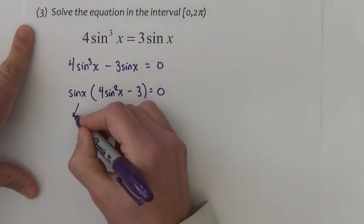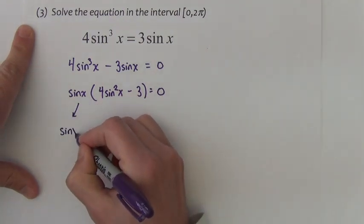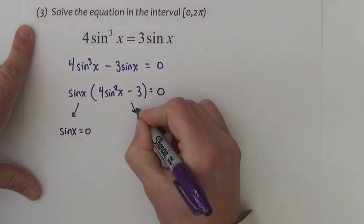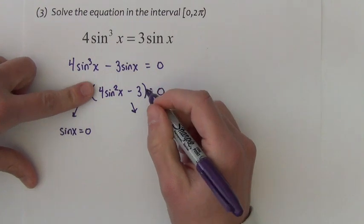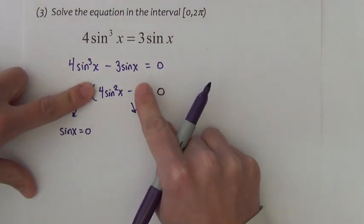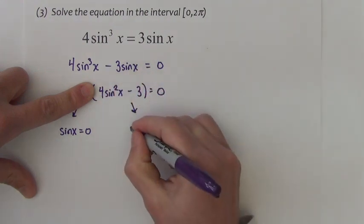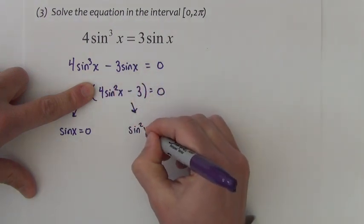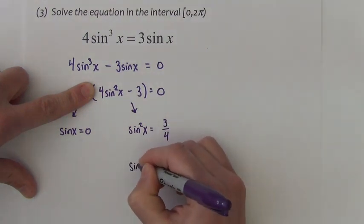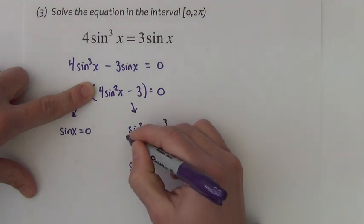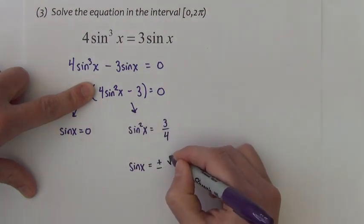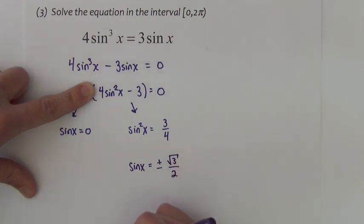Once we're in a factored state, I can take this factor, set it equal to 0, and take this factor and set it equal to 0. If I'm just looking at this, set it equal to 0, I would add 3, divide by 4, I get sine squared equals 3 fourths. Then I take the square root of both sides. I get plus and minus square root of 3 over 2.